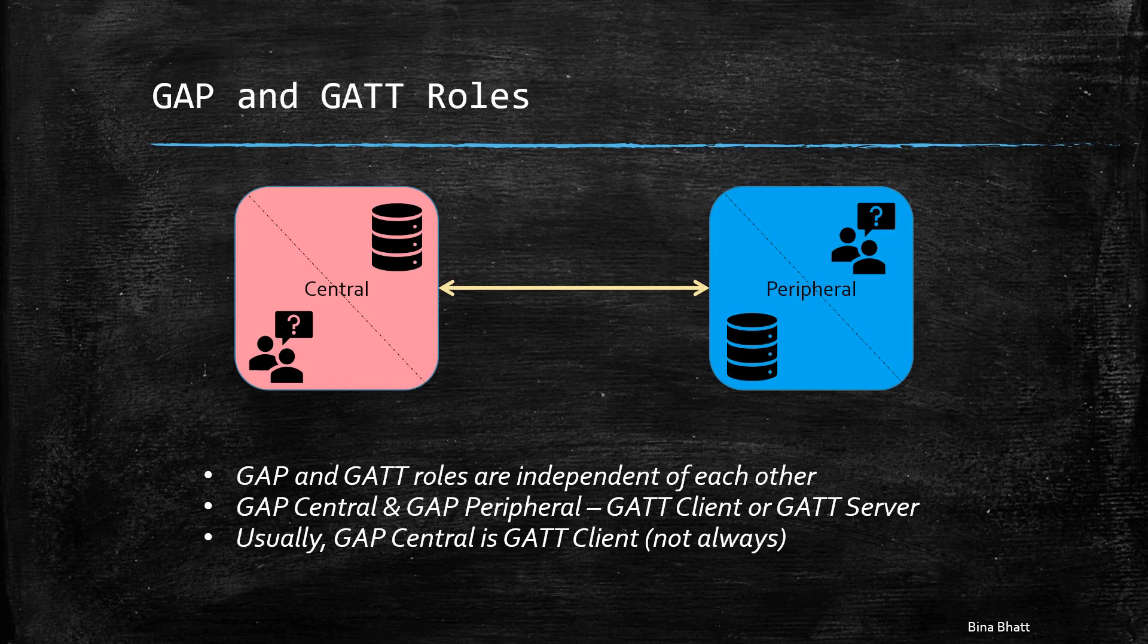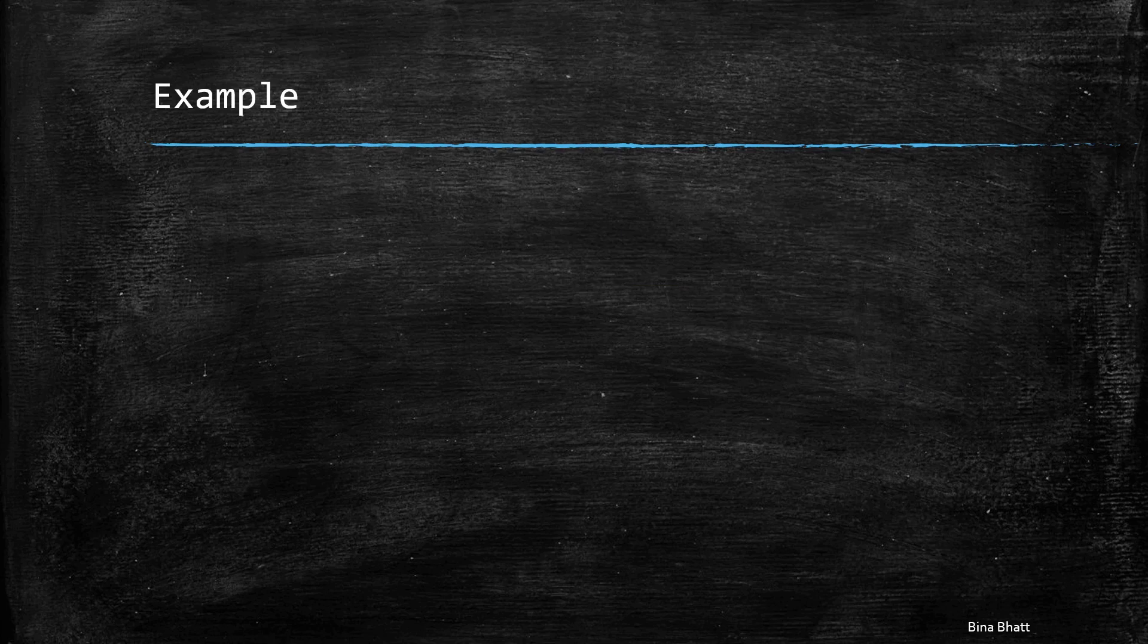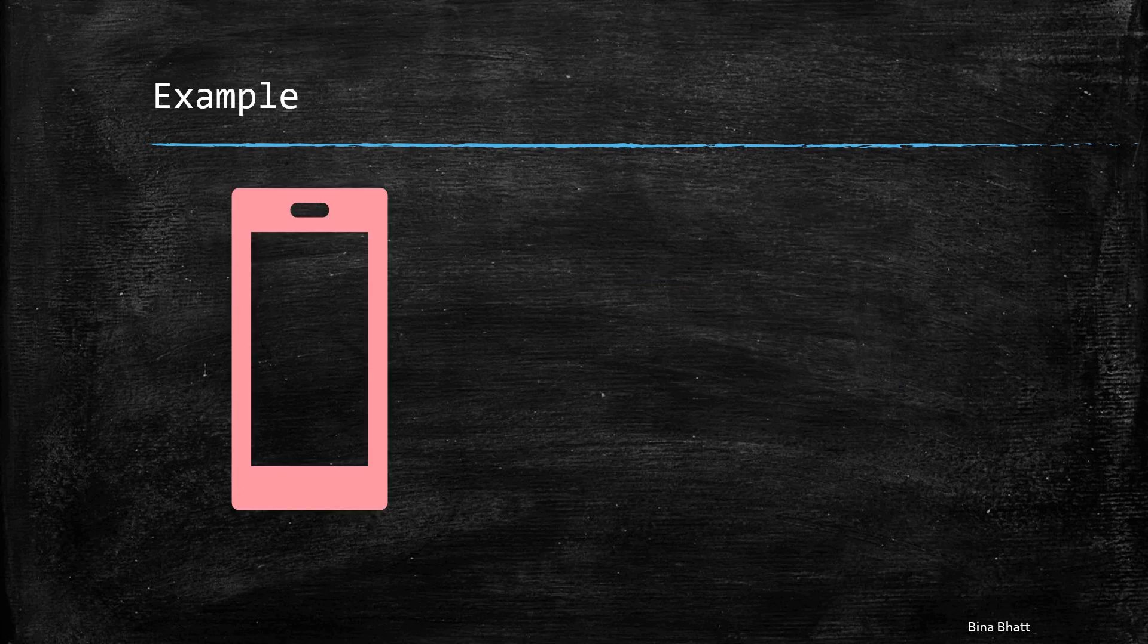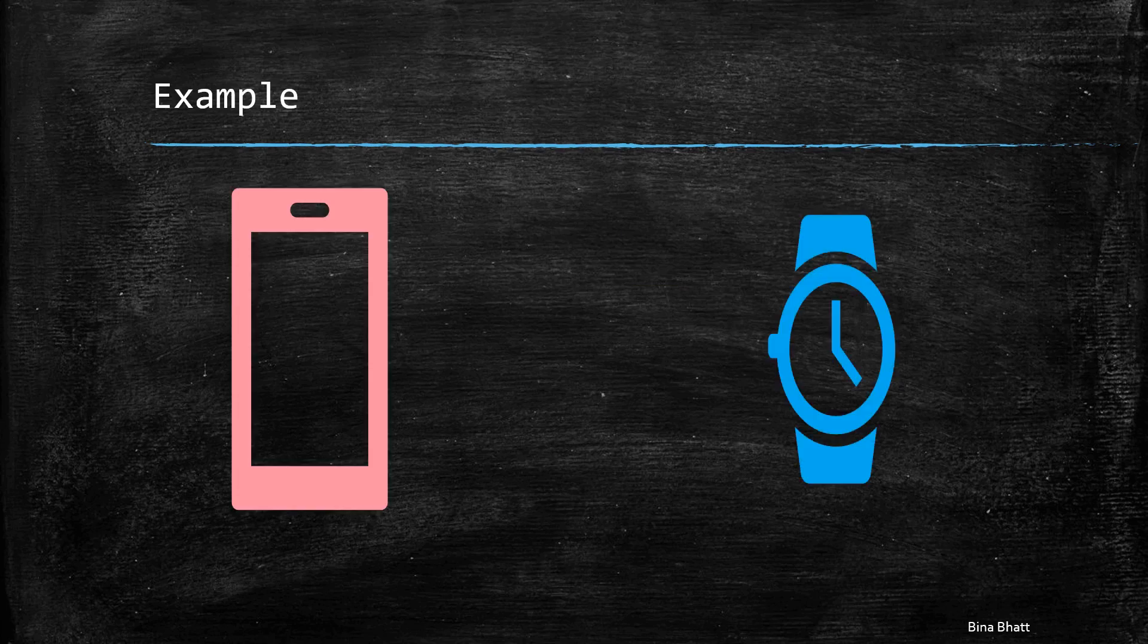This misconception that GAP central should only be a GATT client arises as frequently that is the case. However, let us look at an example and settle this misconception right away. Consider a smartphone paired with a smartwatch. Here, the watch is a GAP peripheral and the phone is a GAP central.